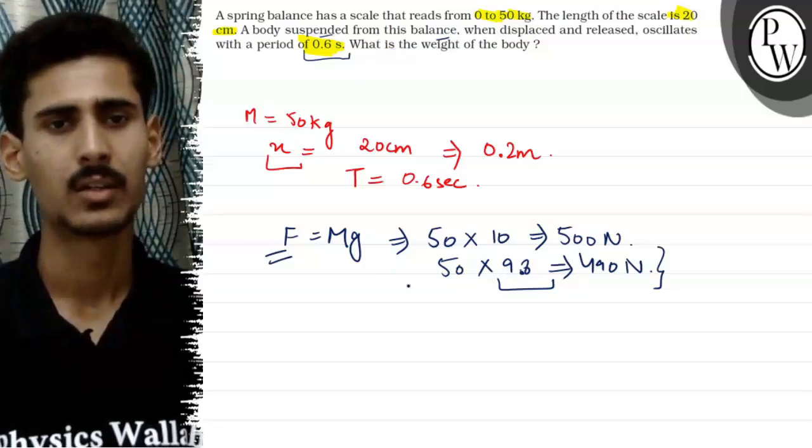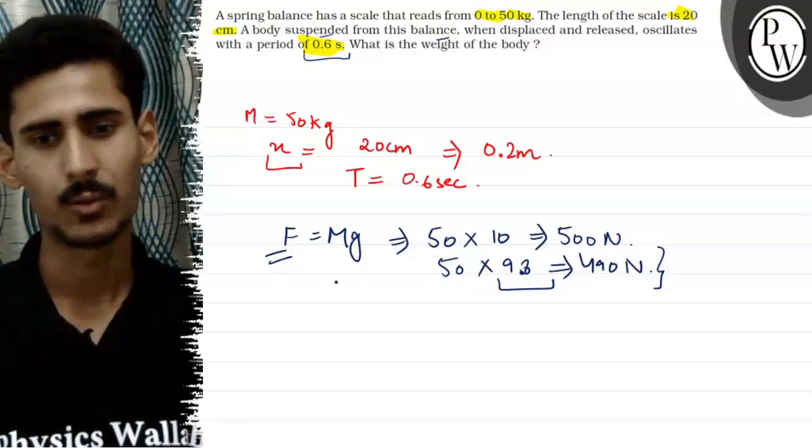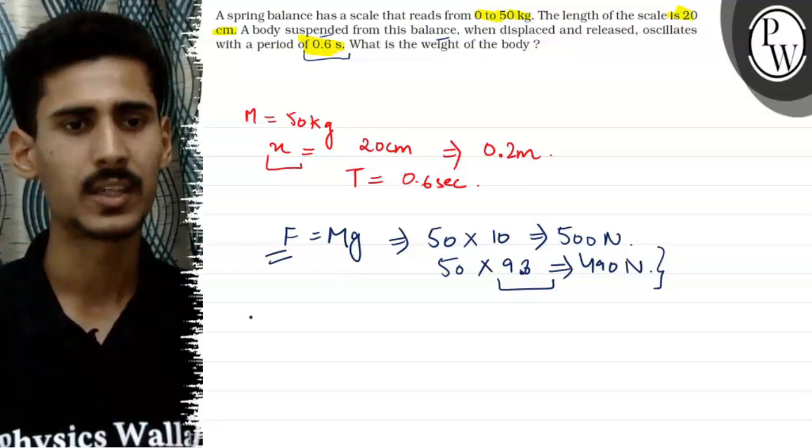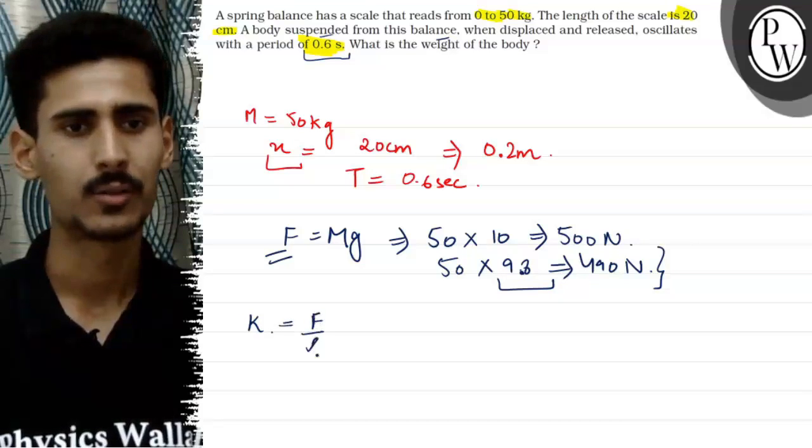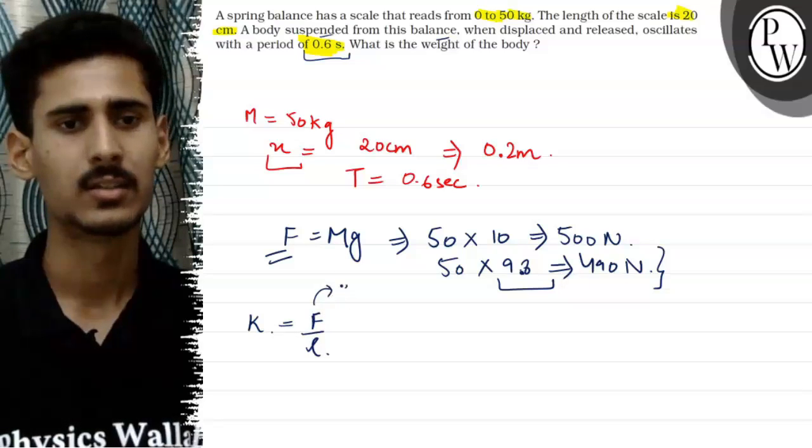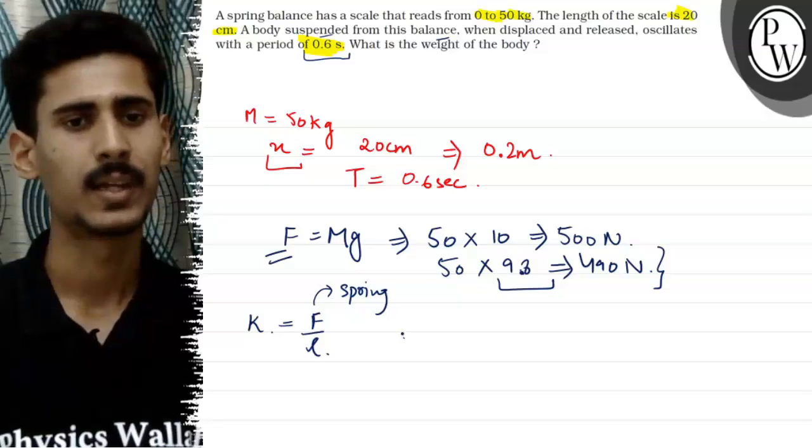So we have to calculate the weight of the body here, unit length. The force that the spring balance can sustain. And length is the length of the spring balance.